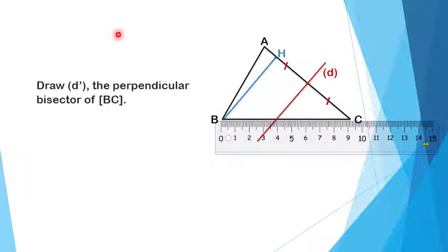Now draw D prime, the perpendicular bisector of BC. This is segment BC, it's nine point two. Half of nine point two is four point six. So here at four point six I have to plot the point and say it's the midpoint of BC.